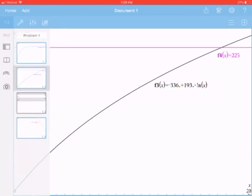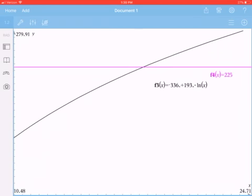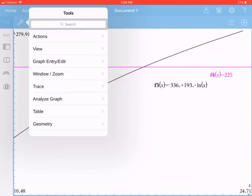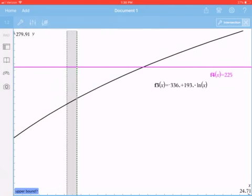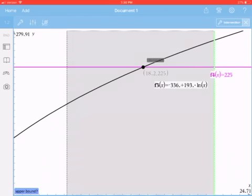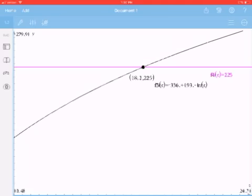To find where the pink line and black line intersect, on the TI-Nspire iPad version, I go to analyze the graph and find the intersection. I set the lower bound on the left and upper bound on the right to enclose the area. This gives us x = 18.2.